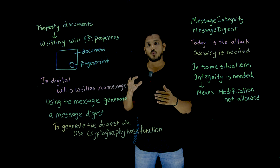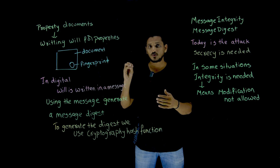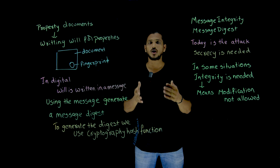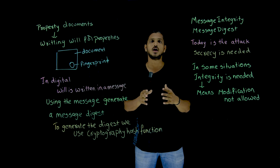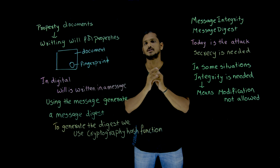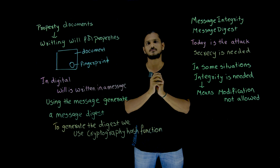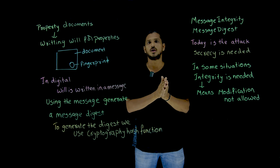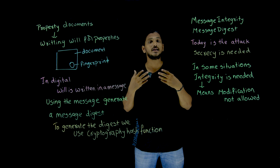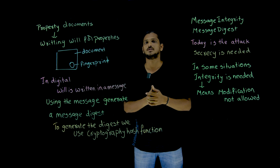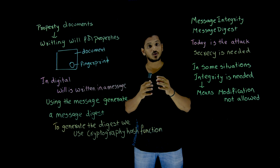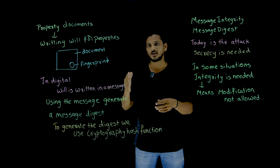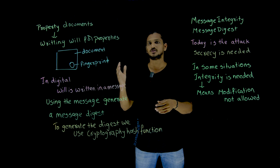In our previous classes, whatever we have discussed up to now in cryptography, what we have discussed was in order to hide the message — the actual message should not be shown. We need to maintain the secrecy of the message. That is what we have done in our symmetric and asymmetric key cryptography systems.